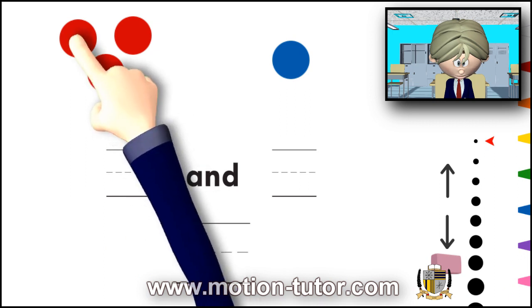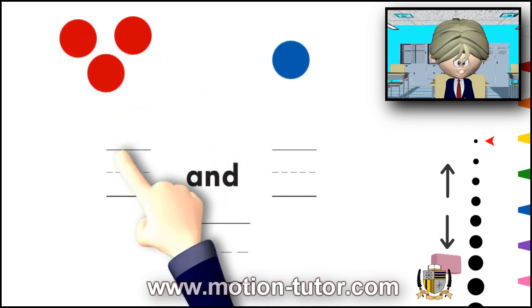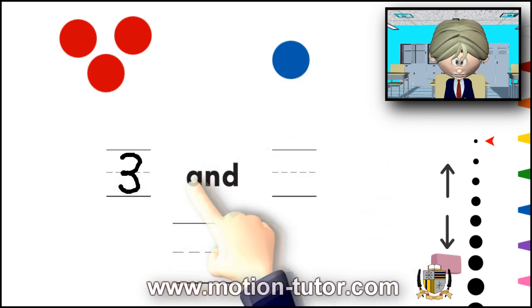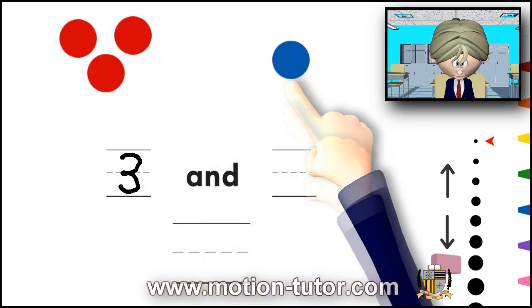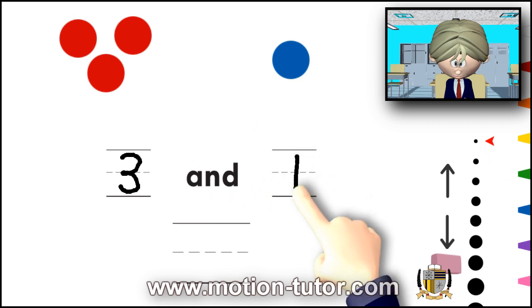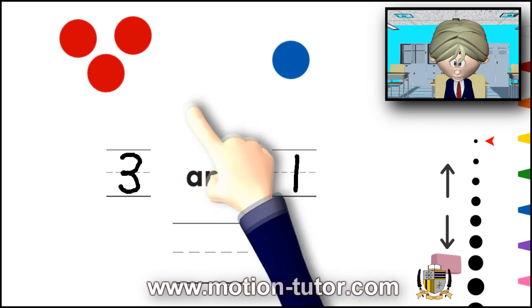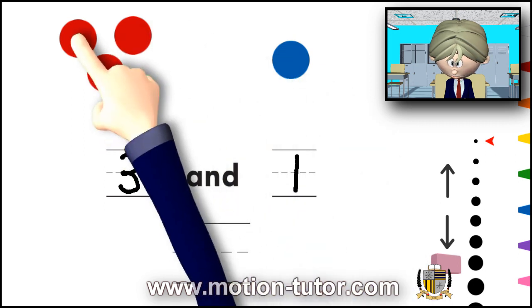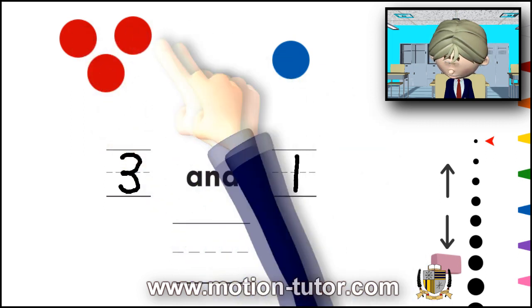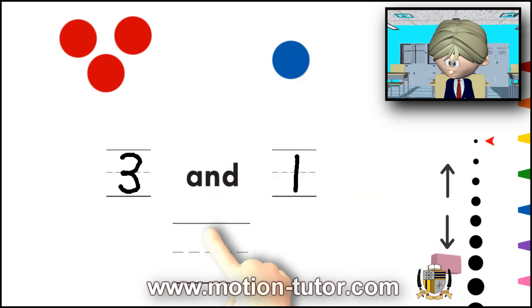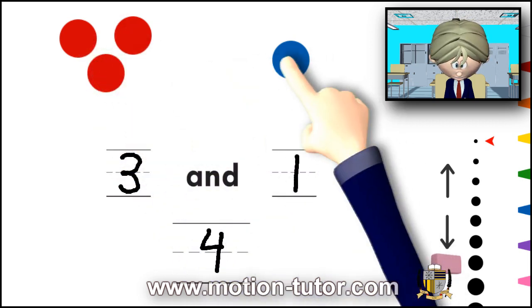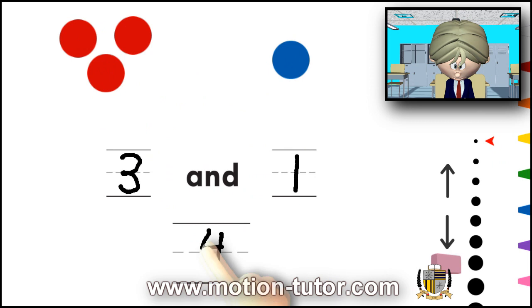So I have 1, 2, 3, 3 reds, and I have 1 blue. So what do I have total on the screen? I have 1, 2, 3, 4. So this is showing us that 3 and 1 is 4.